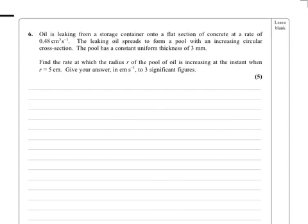Firstly, the 0.48 cm³ per second is a volume per second calculation, so it's the rate at which the volume is increasing. So I'll write that here. The rate at which the volume is increasing, that's dV/dt, is 0.48.